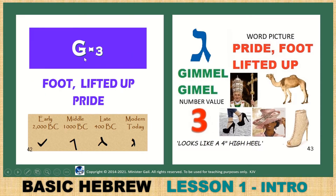Gimel — G, the third letter. Foot, lifted up, pride. Here is what it looked like in 2000 BC, and it evolved to this shape today. It looks like a four-inch high heel — like a high heel — so you can see pride and lifted up. You get hats so big you cannot see the eyes of a person — that is not good because the Holy Ghost looks into the eyes. You want your eyes to reflect the image of Christ. This is high and lifted up. Value number 3.